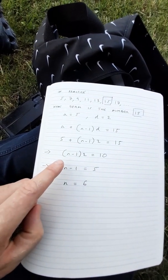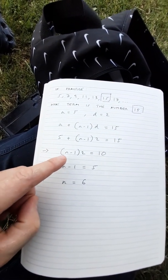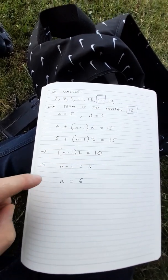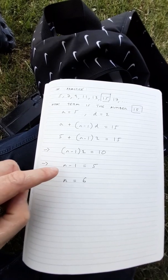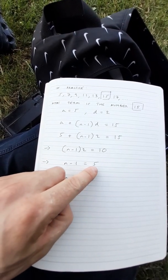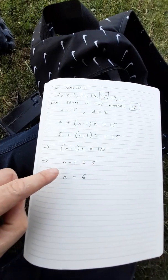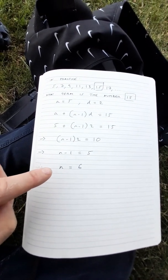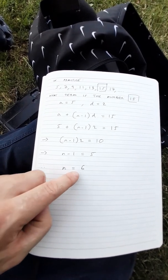If we do this we get this equation. By subtracting 5 from both sides we get n minus 1 times 2 is equal to 10. If we divide both sides by 2 we get n minus 1 is equal to 5. And by adding 1 to both sides we isolate n and n is equal to 6.